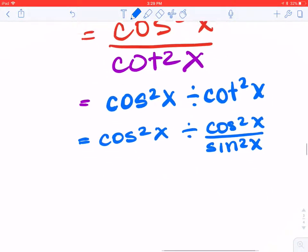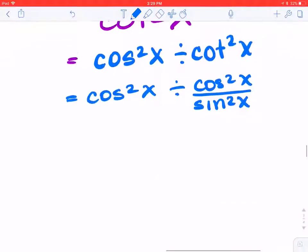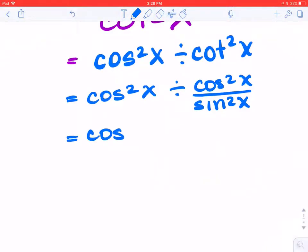Now I realize I'm dividing by a fraction, and we don't divide by fractions. We multiply by the reciprocal. So I'm going to leave my first term the same, and then I'm going to change this to multiply by the reciprocal of my second term.